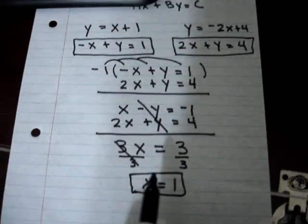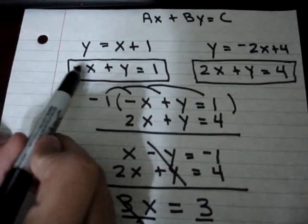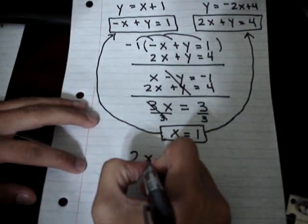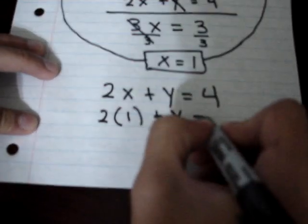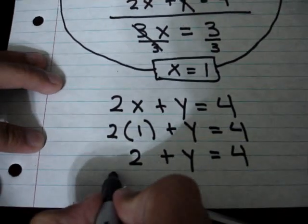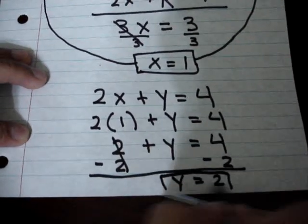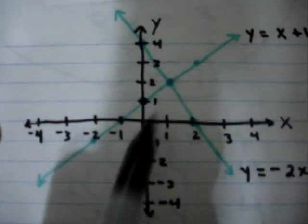Now, how do you solve for y? To solve for y, you take x is equal to 1 and plug it in to one of the two original equations. You can plug it into negative x plus y is equal to 1, or into 2x plus y is equal to 4 — it doesn't matter which one. I'm going to pick 2x plus y is equal to 4. Wherever I see an x, I put 1. So 2 times 1 is 2, plus y is equal to 4. To solve for y, simply move the 2 over to the other side. y is equal to 2. So, x is equal to 1 and y is equal to 2. If you look at the graph, that's exactly the answer: (1, 2).